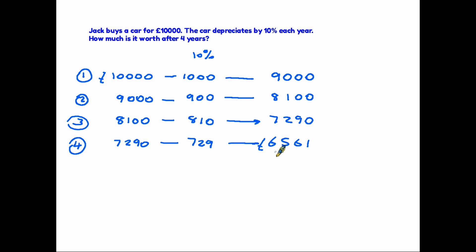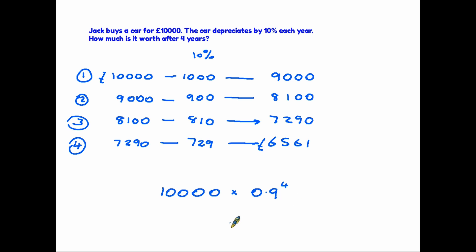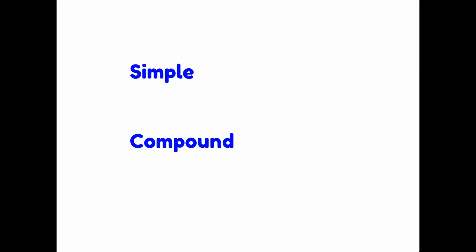There is also a way to do this using powers, but for depreciation it's a little different. If we are losing ten percent then what we are left with is ninety percent — and that's the figure you work with using powers. The calculation is to start with ten thousand and multiply not by the ten percent but by what is actually going to be left, which is ninety percent — so we multiply by 0.9 to the power of four because of four years — and that gives you six thousand five hundred and sixty one.